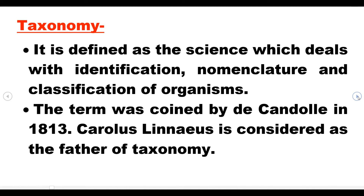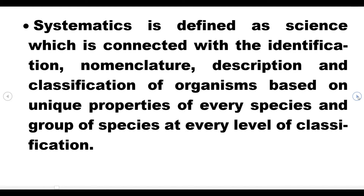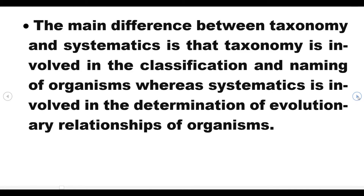Carolus Linnaeus is considered the father of taxonomy because he laid the foundation of taxonomy. Systematics is defined as the science connected with identification, nomenclature, description, and classification of organisms based on unique properties of every species and groups of species at every level of classification. The main difference between taxonomy and systematics is that taxonomy is involved in the classification and naming of organisms, while systematics is involved in the determination of evolutionary relationships of organisms.